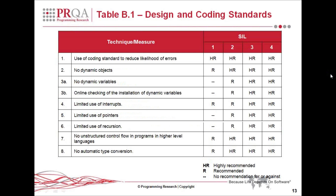That table is Table B1, design and coding standards, using the same numbering format — one through eight, with 3A and 3B being alternatives, and the same highly recommended and recommended designations. Looking through some of these entries, those writing in C will probably recognise concepts familiar from the MISRA C rules — which we'll come onto a little bit later. For example, they recommend that you limit the use of pointers and limit the use of recursion.